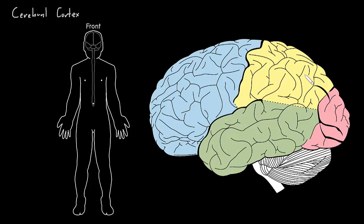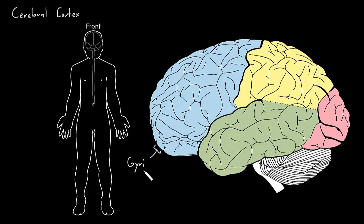The cerebral cortex has these ridges and grooves on its surface — it's all wrinkled up and folded. These ridges, like this one right here, are called gyri. That's the plural; a single one is called a gyrus.